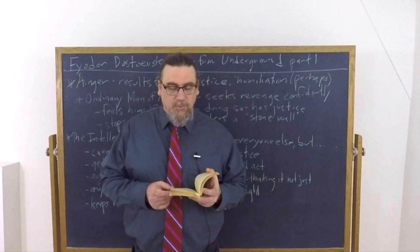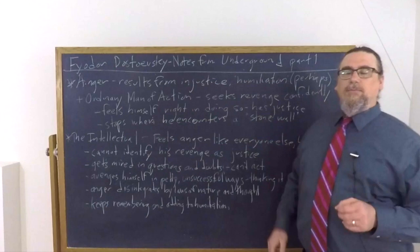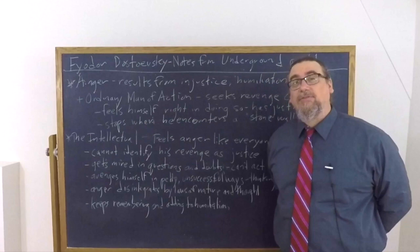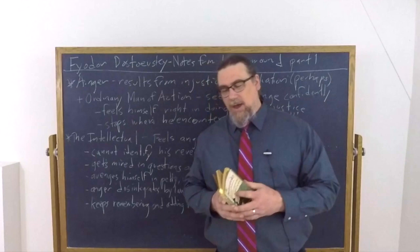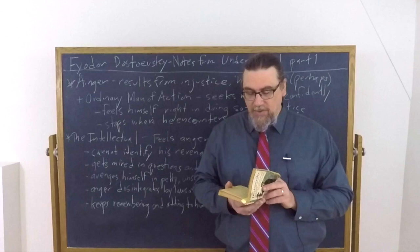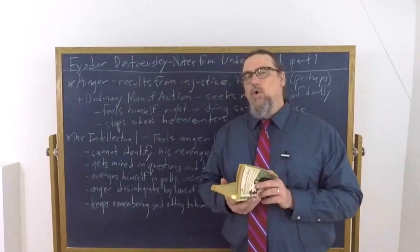What does he do instead? He avenges himself every once in a while—he comes out of the mouse hole and sticks somebody, but does so in ways that are petty or passive aggressive, and they're generally unsuccessful. The mouse does so in spurts from behind the stove, anonymously, doubting its vengeance is right, feeling it will hurt itself a hundred times more than the one against whom its revenge is directed, who probably won't even feel enough of an itch to scratch himself.